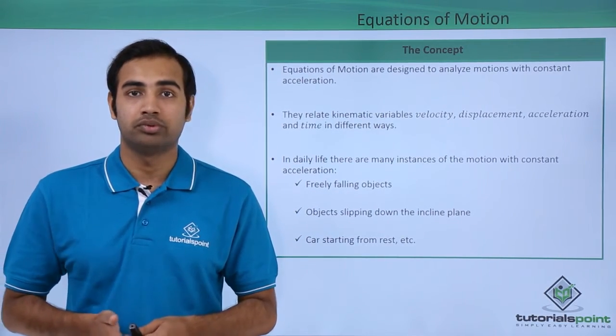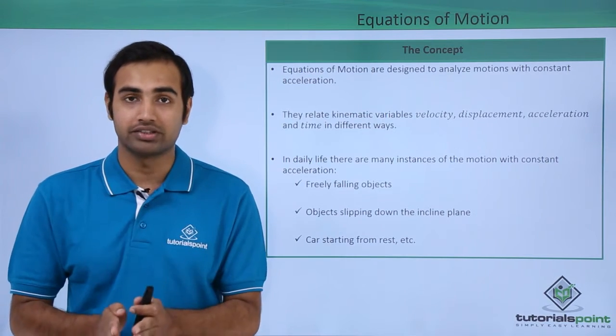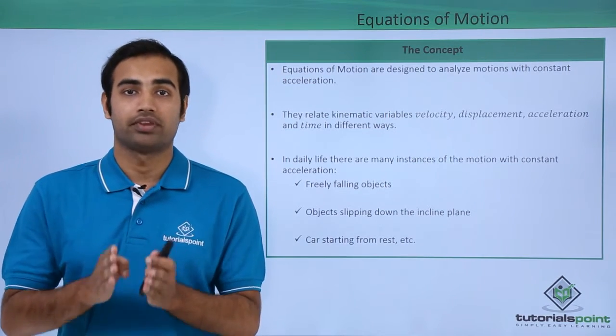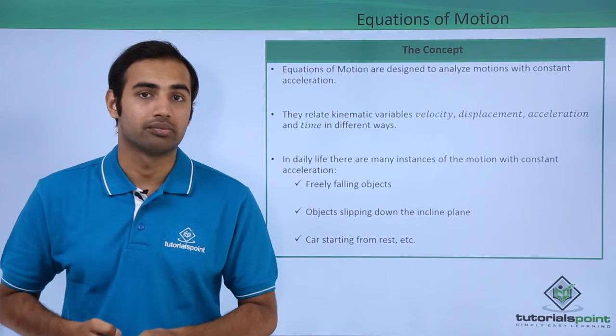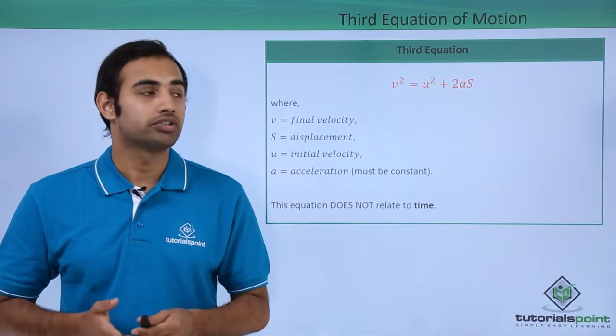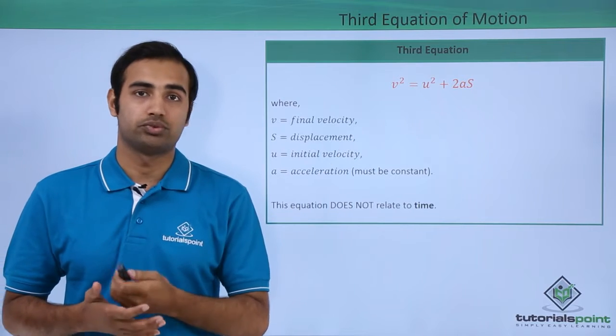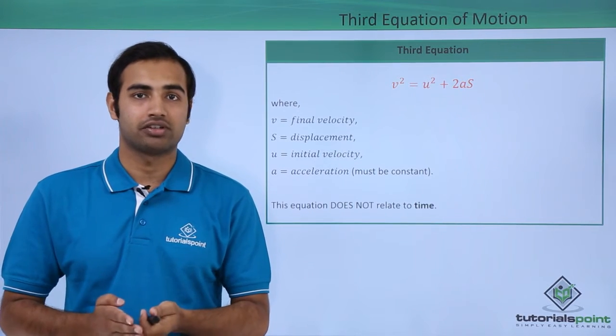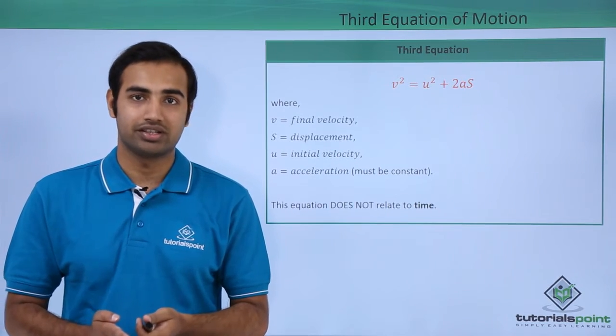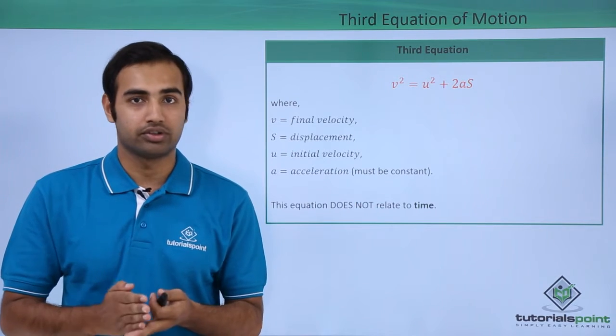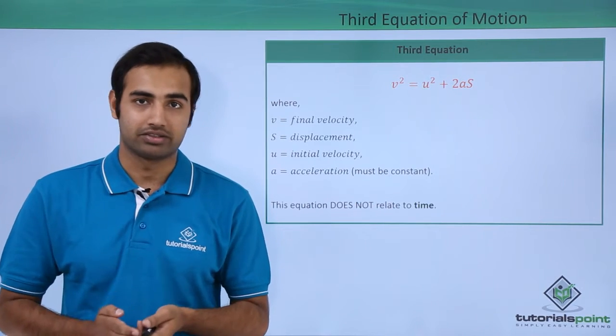But now, we will talk about the third equation of motion. First of all we will see the expression and then we will try to prove it using analytical method and graphical method. So the third equation of motion looks like v² = u² + 2as, where v is the final velocity, u is the initial velocity, a is the constant acceleration, it must be constant, and s is the displacement.